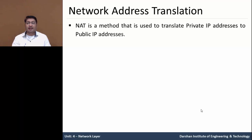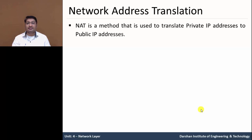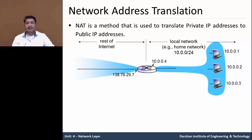Let us understand network address translation, NAT. NAT is a method that is used to translate private IP addresses to public IP addresses — it means it is used to translate a private IP address to the public IP address.